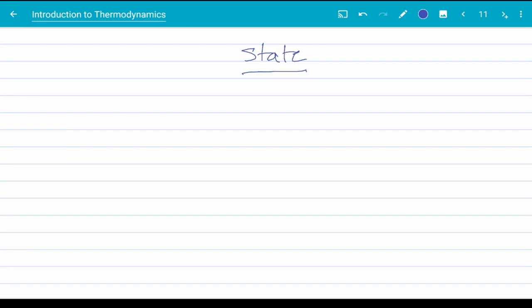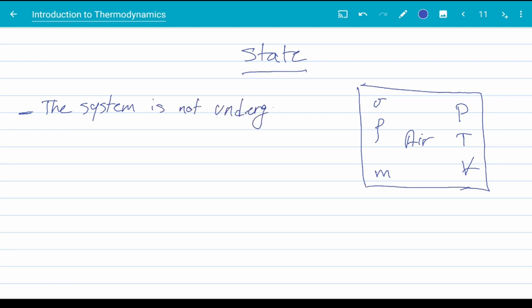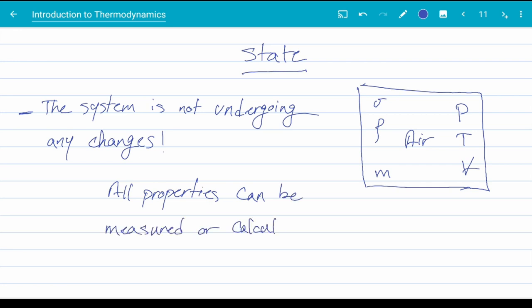We can now talk about the concept of state. Consider a system like the tank of air, like this tank of air that I'm drawing here, that is not subjected to any form of changes. In this case, we can measure or calculate every property of the system. These properties, in turn, describe the condition or state of the system. When, due to any sort of causes, the value of a system property changes to a new number, the system changes to a new state. We will see the importance of system state as we progress through the course.